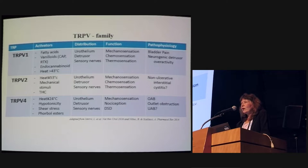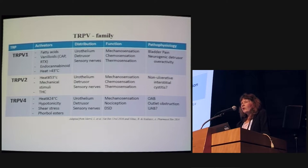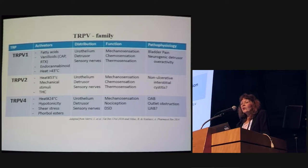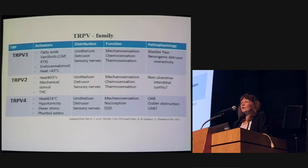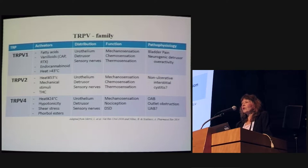TRPV2 is activated at much higher temperatures and by mechanical stimuli. TRPV4 is considered more of a mechanosensor, activated by changes in mechanical stretch, tension, hypotonicity, shear stress, and even phorbol esters. In terms of distribution, it looks pretty much the same — urothelium, bladder nerves, and muscle — but there is disparity between them in terms of subtypes of afferents. TRPV4 expression appears to be more prominent in the urothelium.